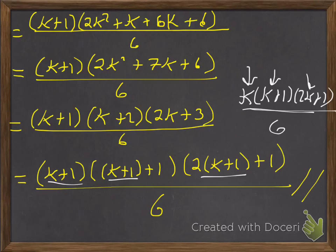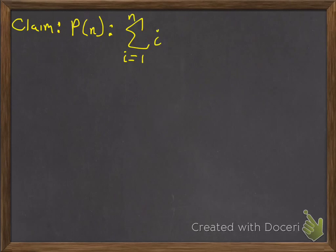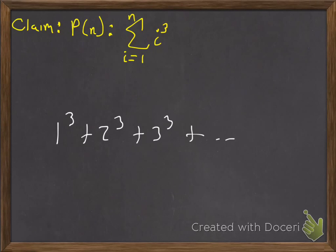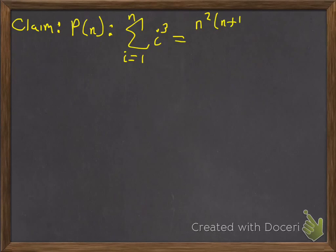Let's go ahead and look at the i cubed formula. I think the i cubed one is easier than the squares one — you don't have to do as much expanding and factoring. So the claim: P(n) is the statement that the sum from i equals 1 to n of i cubed — so 1 cubed plus 2 cubed plus 3 cubed plus ... plus n cubed — equals n squared times (n+1) squared all over 4.